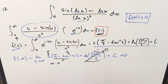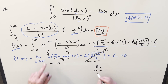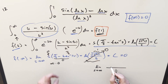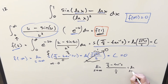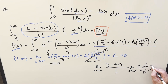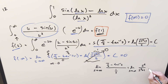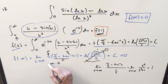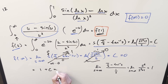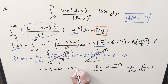We handle the indeterminate form ∞ · 0 using L'Hôpital's rule. Rewrite s·(π/2 - arctan s) as (π/2 - arctan s)/(1/s). Differentiating: the numerator gives -1/(s² + 1) and the denominator gives -1/s². The minus signs cancel, and we're left with s²/(s² + 1), which approaches 1 as s → ∞. So we get 1 + c = 0, meaning c = -1.